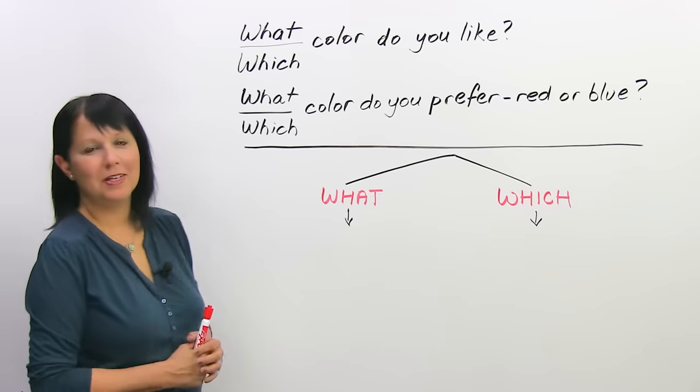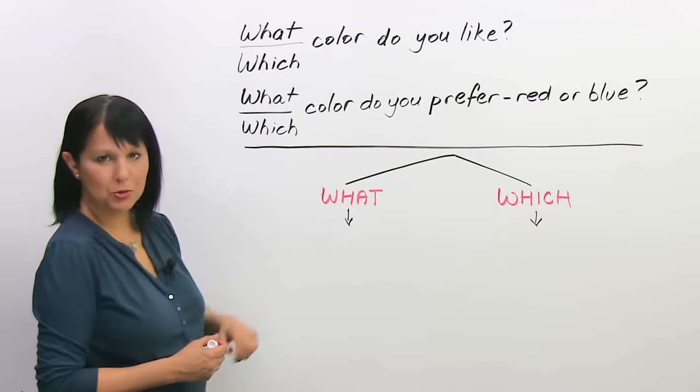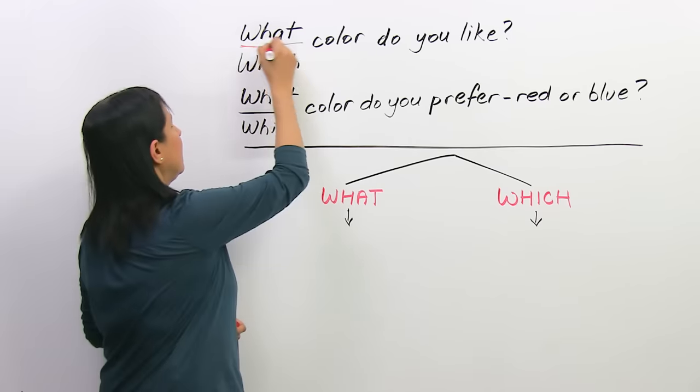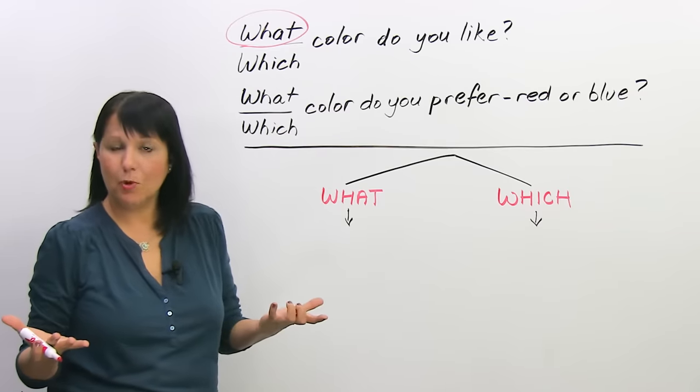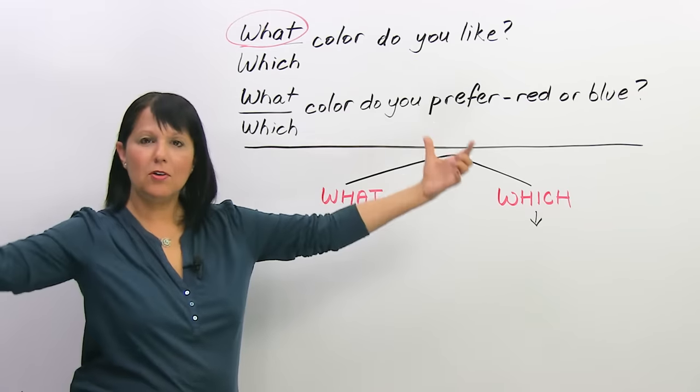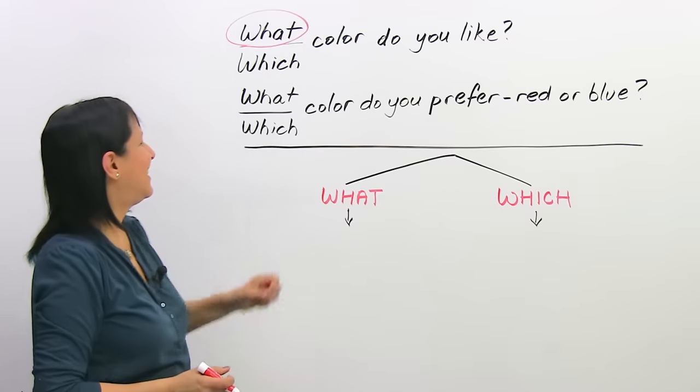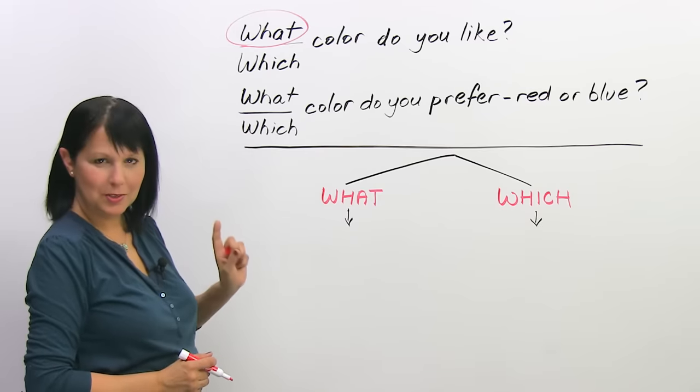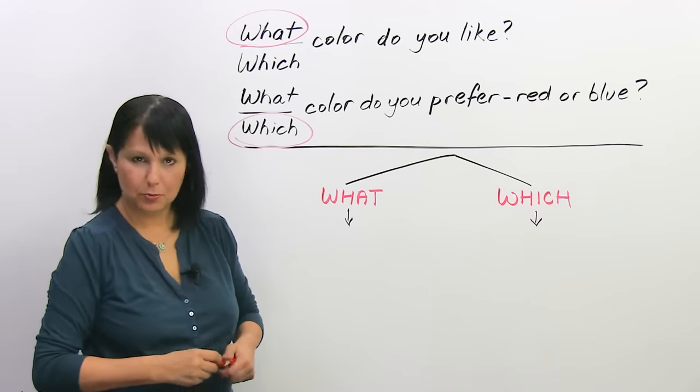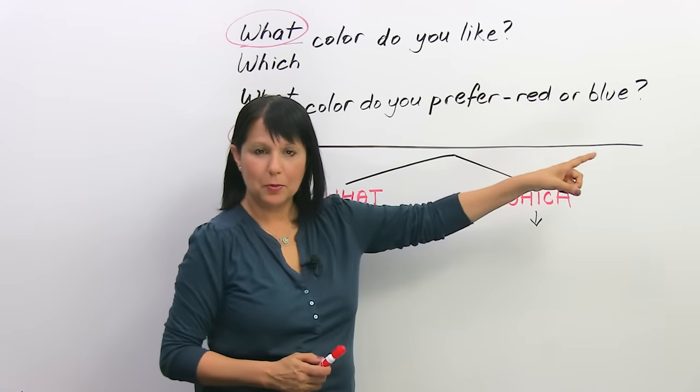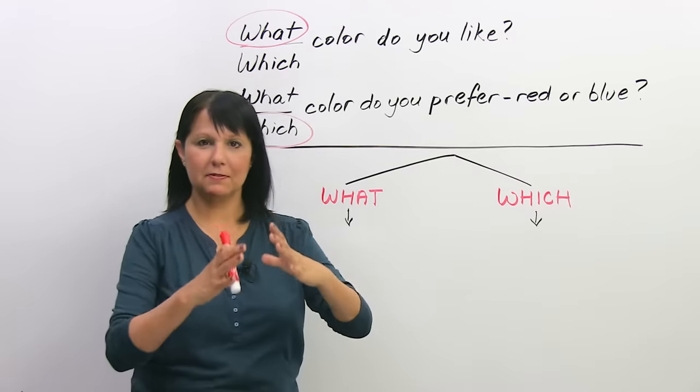Okay. So, let me tell you what we would usually say. Here, we would usually say 'what color do you like?' Why? Because we're asking out of all the colors in the world, what color do you like? And here, we would usually say 'which'. Which color do you prefer, red or blue? Why? Because here we have a specific choice.